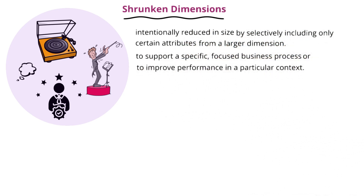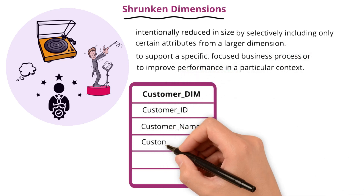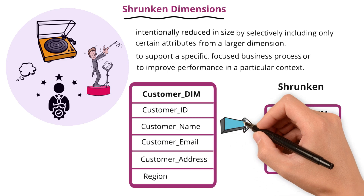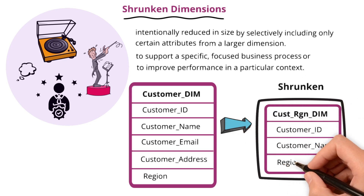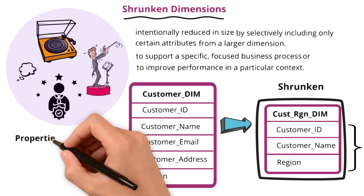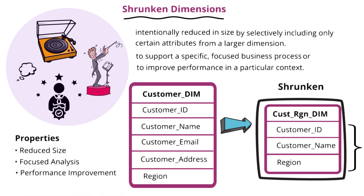For instance, if a company has a large customer dimension that includes all customer data, a shrunken customer dimension might be created for a specific regional sale. This shrunken dimension would only include customers from that region and relevant attributes, rather than the entire customer base. The key properties of shrunken dimensions are: reduced size, focused analysis, performance improvement, and maintained relationships.